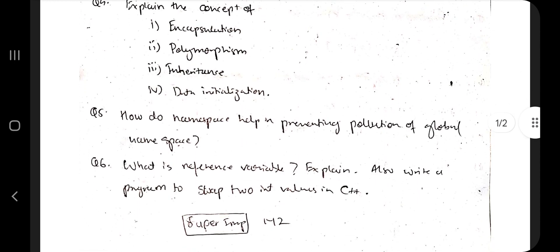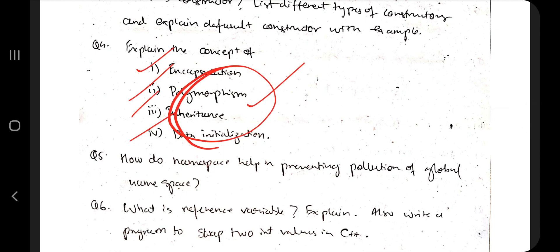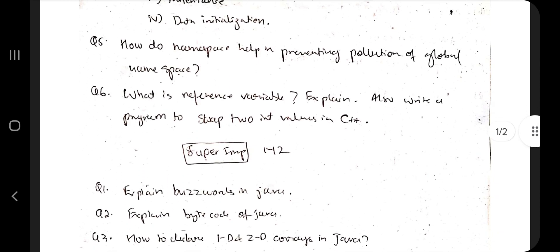Next, we have the super important OOP concepts: encapsulation, polymorphism, inheritance, and data abstraction. You need to explain all of these with examples, theory, definitions, and real-life applications. Covering all of that thoroughly is what will get you full marks.